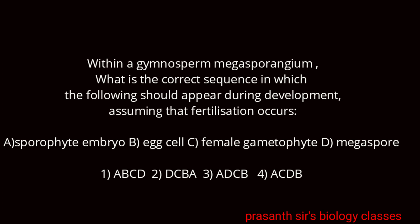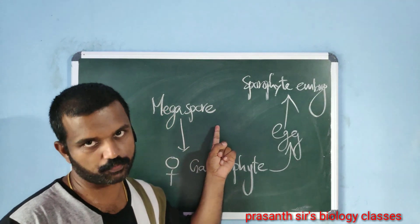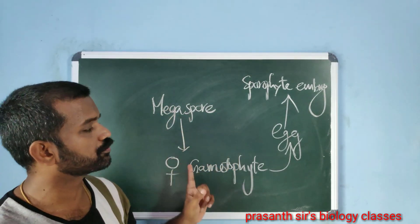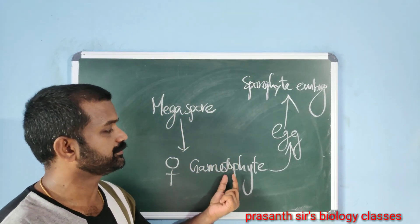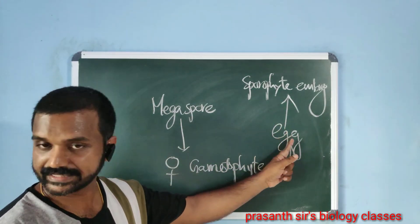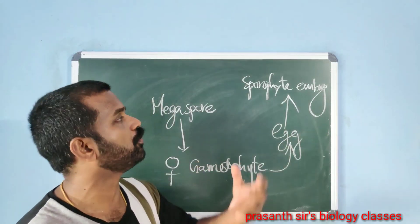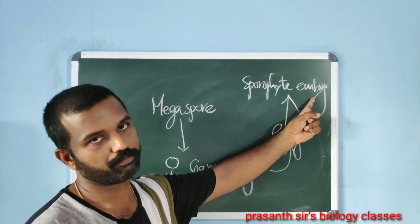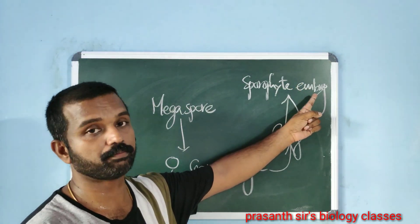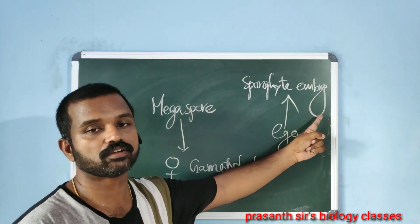Next question: within a gymnosperm megasporangium, what is the character sequence in which the following should appear during development, assuming that fertilization occurs? It starts with the megaspore — the megaspore develops to form the female gametophyte, the female gametophyte will produce the female gamete, that is the egg, and after fertilization, the zygote forms. That is the character sequence of development.